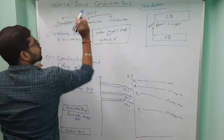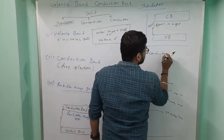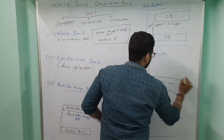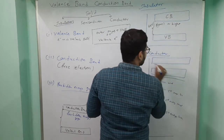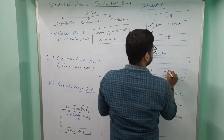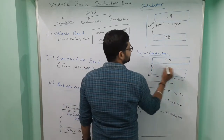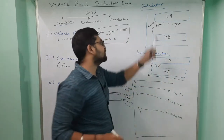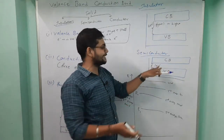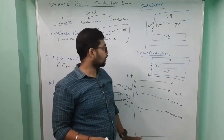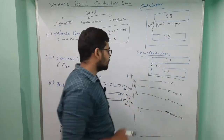Now for a semiconductor, we have a valence band and a conduction band, but the distance between them is very much less compared to an insulator. The energy gap is approximately 1 eV. So compared to an insulator, this gap is very small. That is why it is called a semiconductor — electrons can jump across under certain conditions.